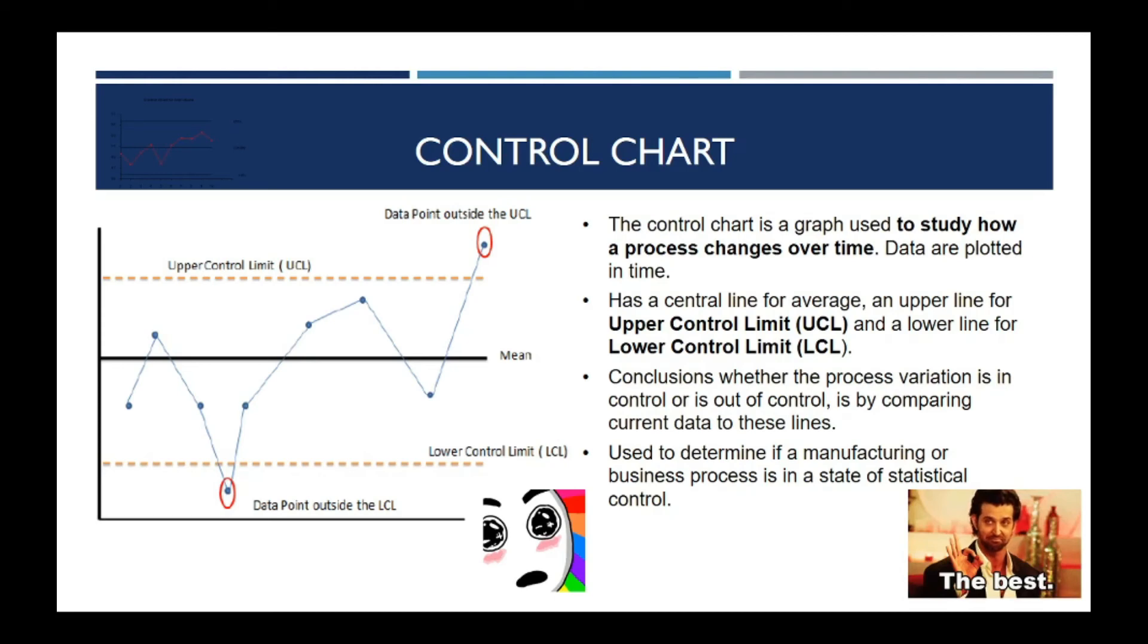The conclusion of whether the process variation is in control or out of control is determined by comparing current data to these lines. Control Chart is also used to determine if a manufacturing or business process is in a state of statistical control.